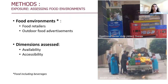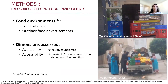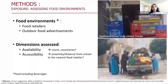We assessed two dimensions — availability and accessibility of food retailers and advertisements — which are widely used in the literature and among the recommended measures of food environment. Availability was measured as count or density — count per area — of the different types of food retailers and food advertisements. Accessibility was measured as proximity or distance from school to the nearest food retailer.